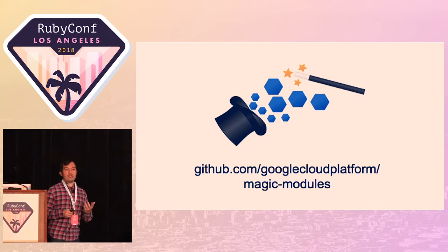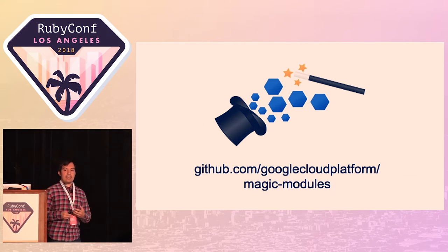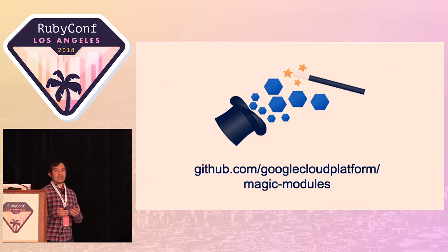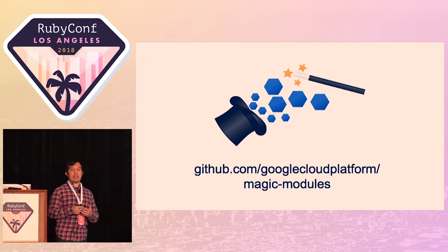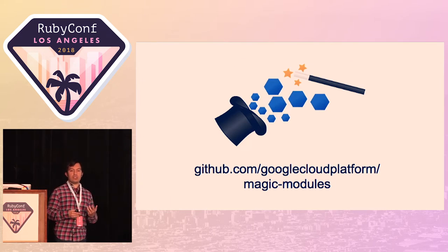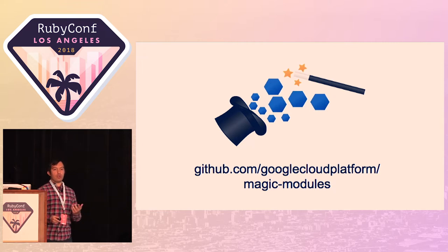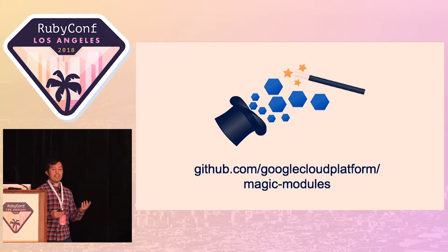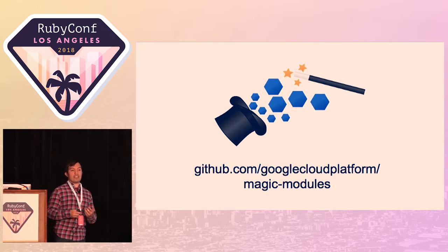Code generation — writing code that in turn writes other code — is something that I've been doing for a really long time. Today I'm going to tell you more about the ideas we used to create Magic Modules, how approachable this whole code generation process is, and when or when not you should actually use this process when you're developing your own code.